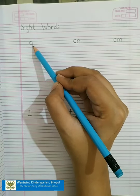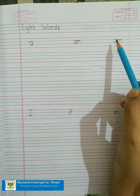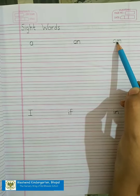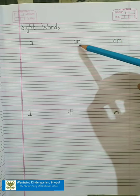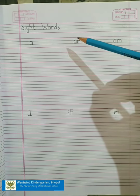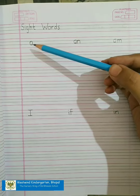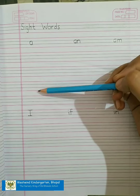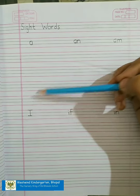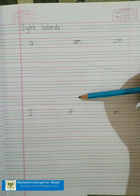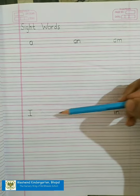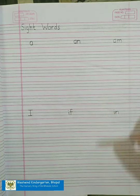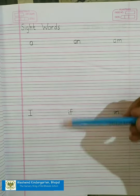Write the letters with the correct formation. Read aloud the sight words along with the phonic sound every time while writing. Now you have to complete it like this. Till here you are going to write A. Till here you will write Aan. And till here you will write Aam. Similarly, you will complete this till here. Alright?